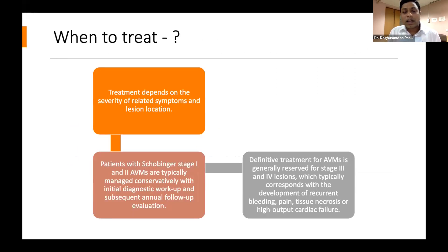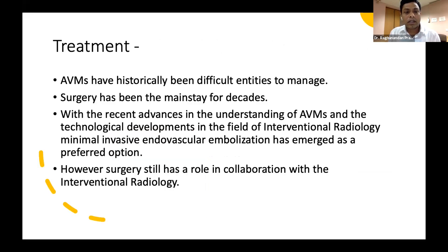Treatment actually depends upon the severity of symptoms and location of the lesion. Type 1 and type 2 in the Iscovinger classification are just followed up; type 3 and type 4 may require treatment. Historically, these high-flow AVMs have been very difficult entities to manage.